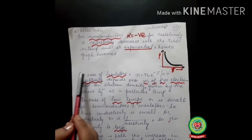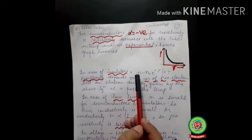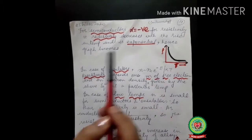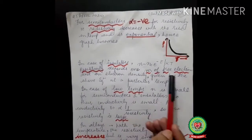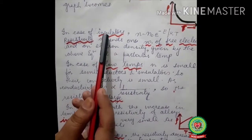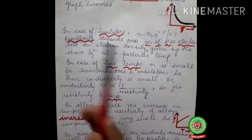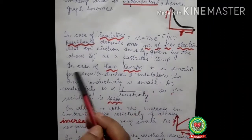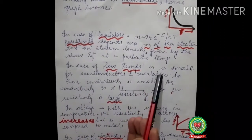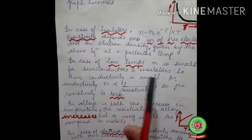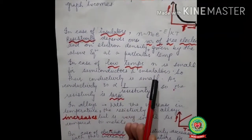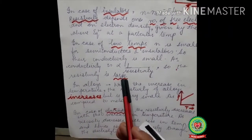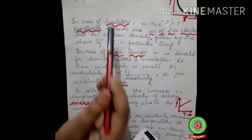For insulators, the number of free electrons n is given by n equals n-naught times e to the power (minus E over kT), where E is the energy gap. Resistivity depends on the number of free electrons, but in insulators the number of free electrons is very less. At low temperature, conductivity is small, meaning electrons cannot move freely. So for insulators, the resistivity is large.